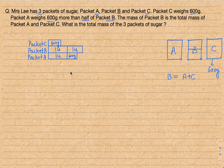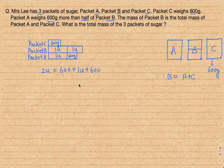So let's write this in the form of units. The mass of B equals A plus C. How much is the mass of B in terms of units? It's two units. And it should be equal to the mass of packet C, which is 600, plus the mass of packet A, which is one unit plus another 600. This gives us: two units equals one unit plus 1200.